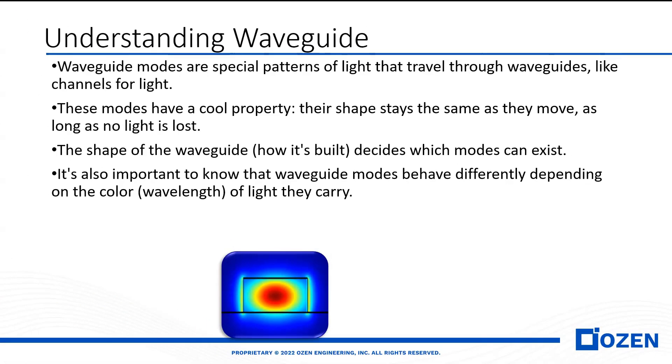But when we want to analyze the waveguide, we need to understand the waveguide modes. Waveguide modes are special patterns of light that travel through the waveguide, like channels for light. These modes, their shapes stay the same as they move, and the shape of the waveguide decides which modes can exist.